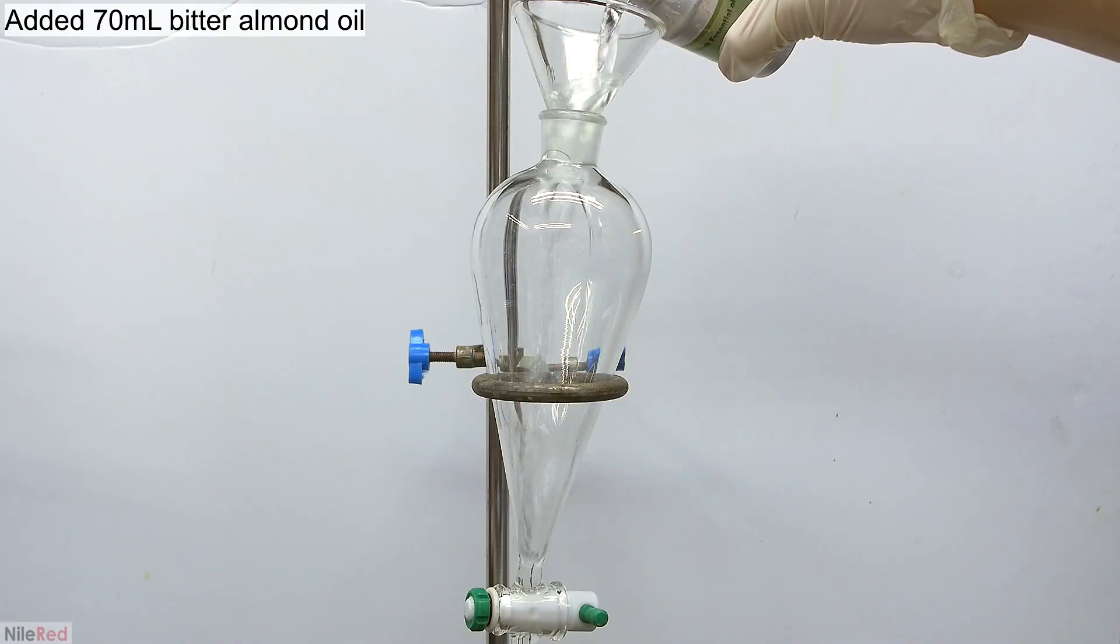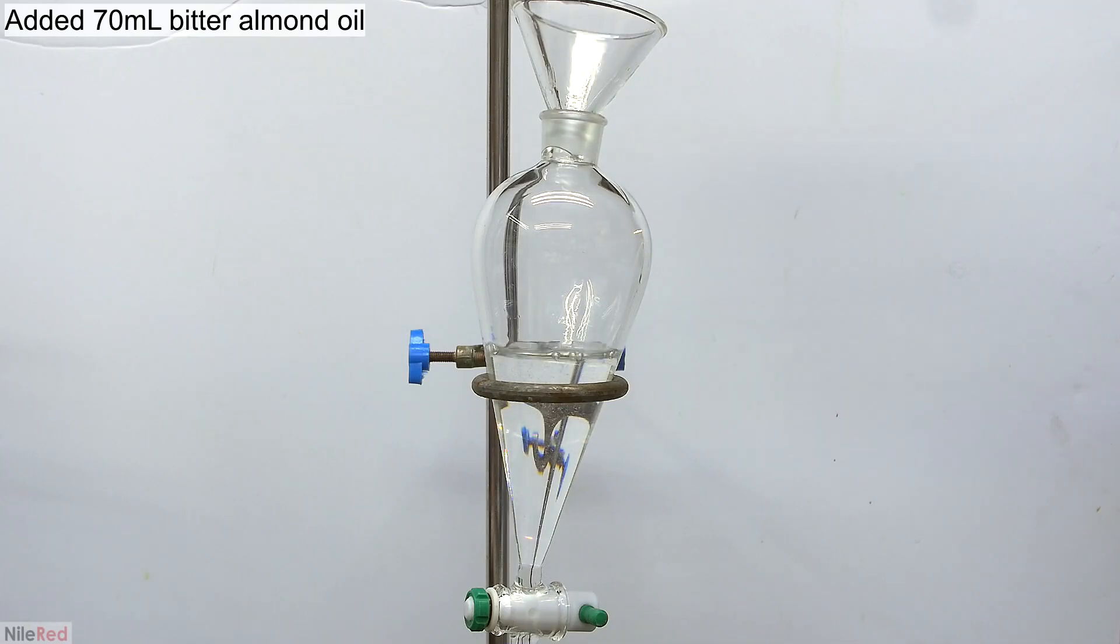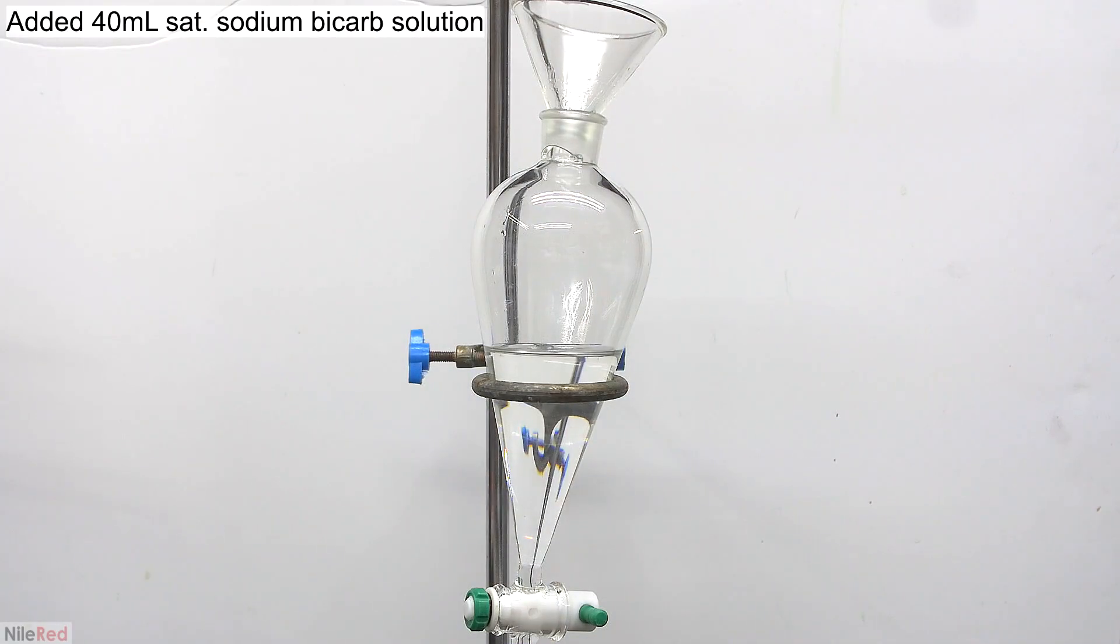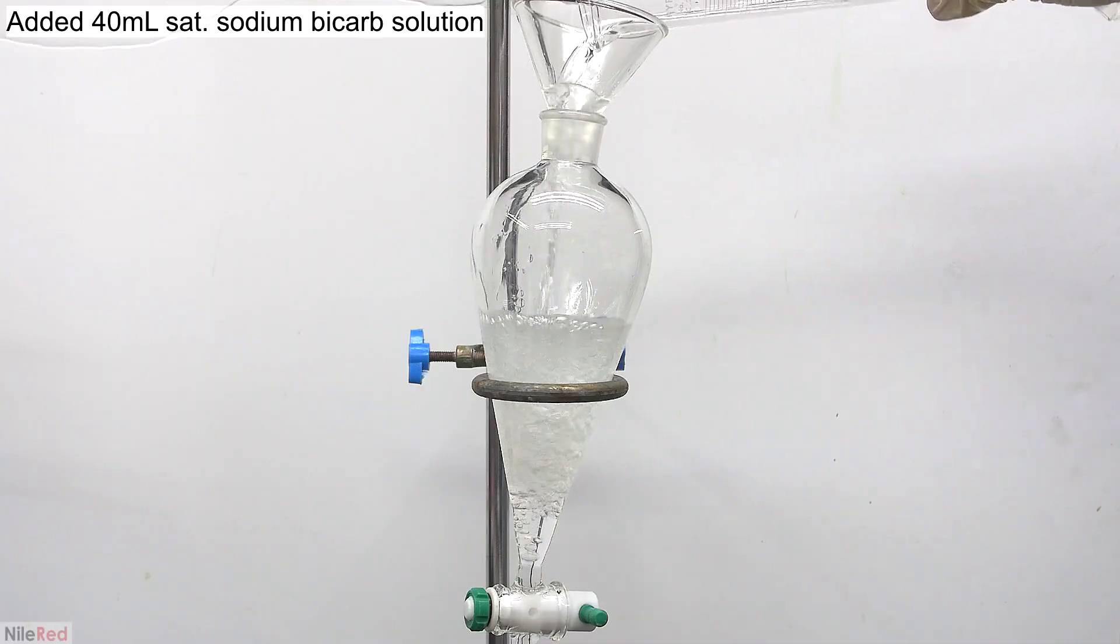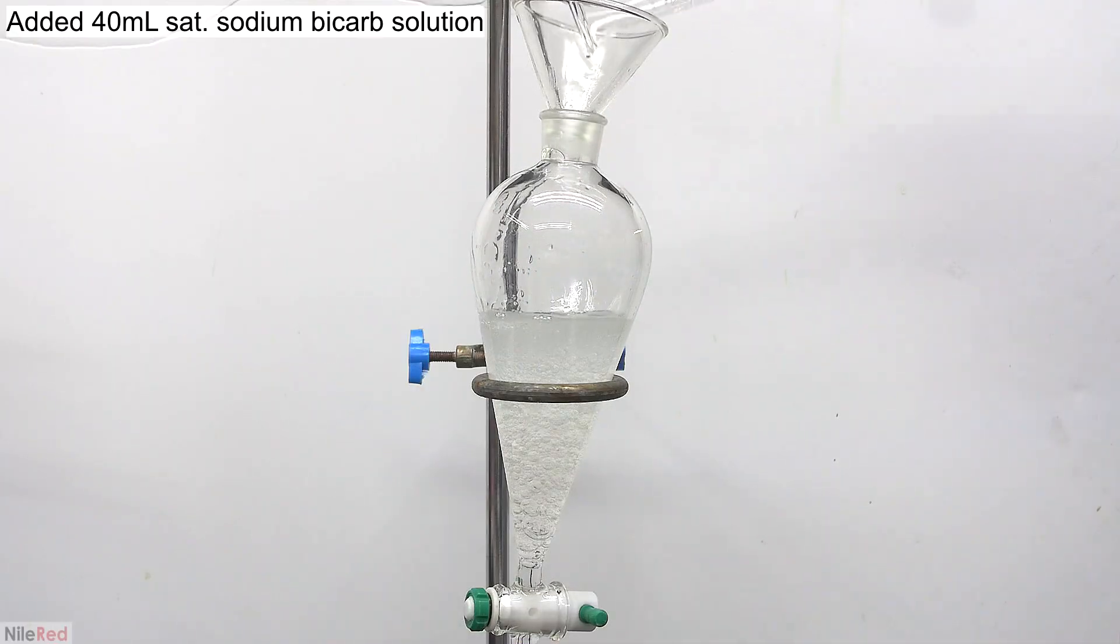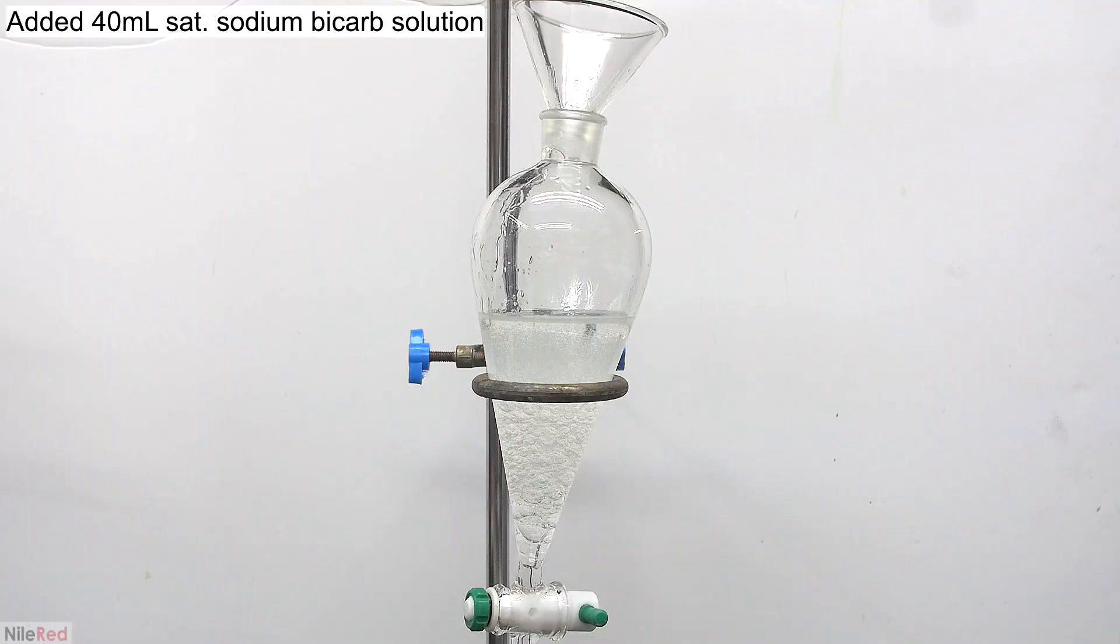To start things off, I add the bitter almond oil to a separatory funnel. I then added in about 40 milliliters of saturated sodium bicarbonate solution. Water and benzaldehyde don't really mix together, and they stay separated as two distinct layers.